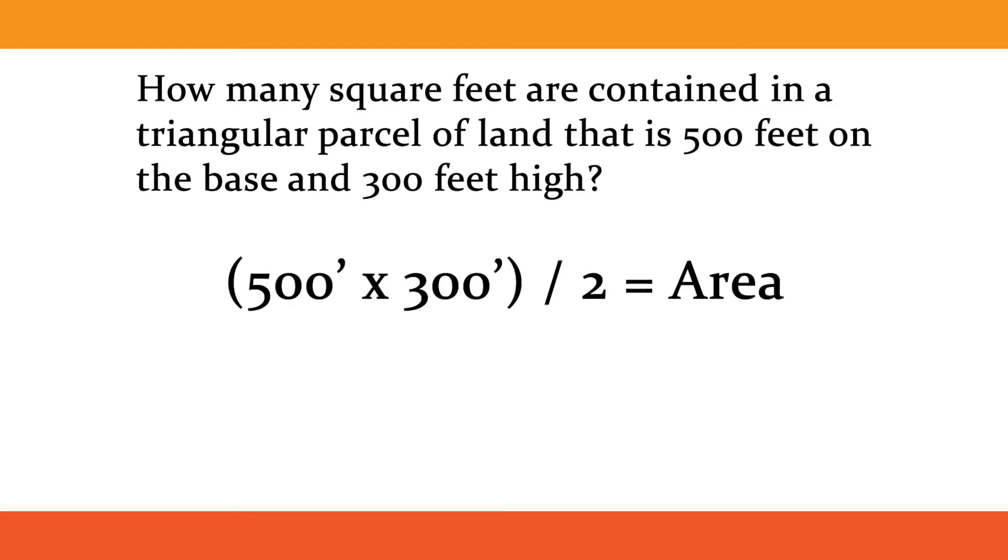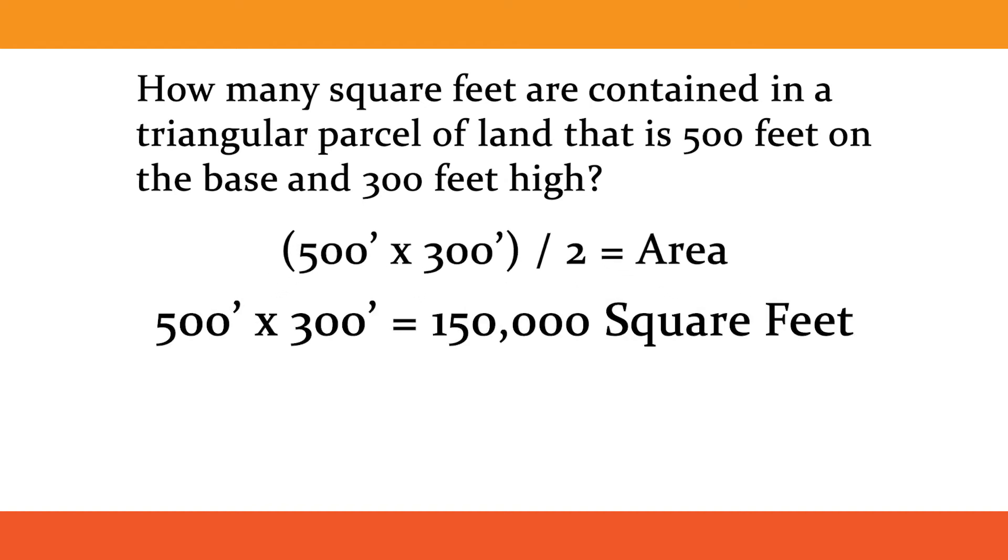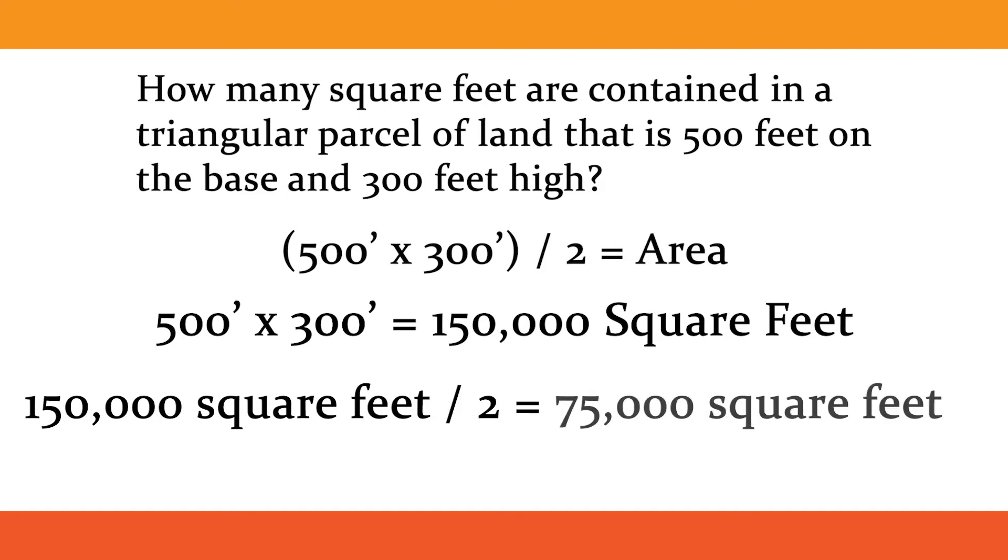500 feet times 300 feet divided by two is the area. 500 feet times 300 feet equals 150,000 square feet. Now let's take 150,000 square feet and divide that by two to equal 75,000 square feet.